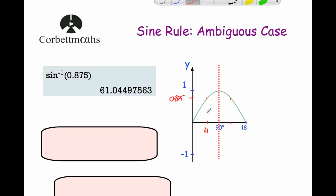And to find it, because the graph is symmetrical, because 61 is approximately 29 below 90, this angle over here will be approximately 29 above it. So it's going to be approximately 119 degrees.